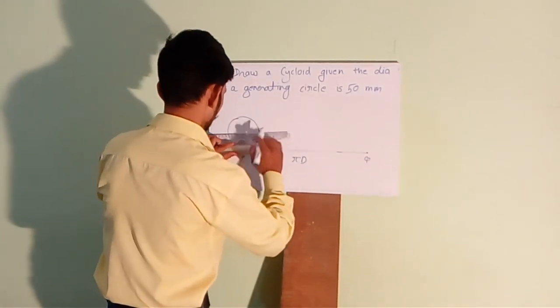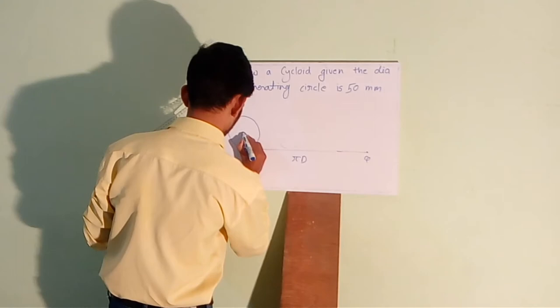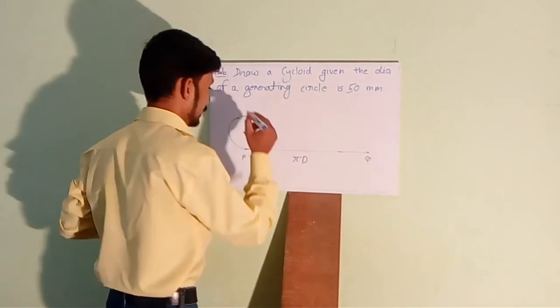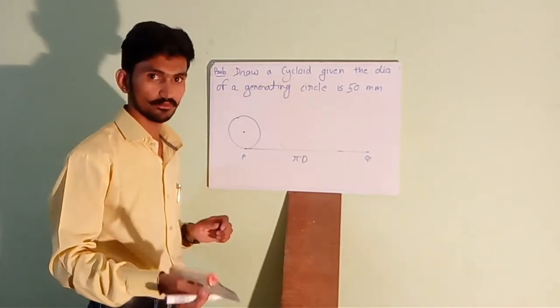Now, mark the center of the circle. Okay. And divide this circle into 12 equal parts.